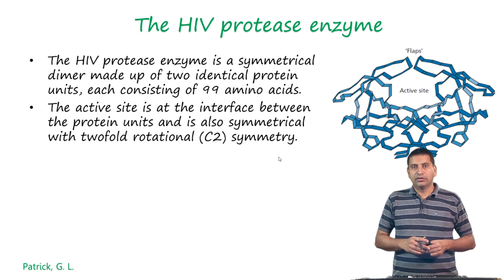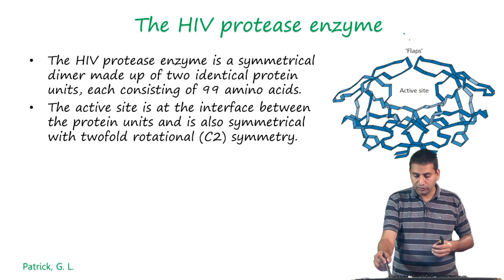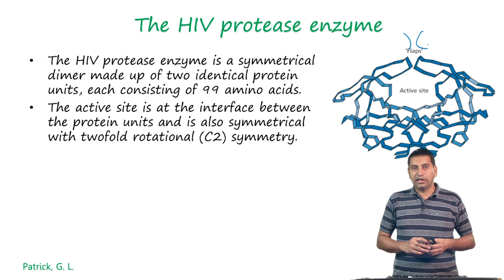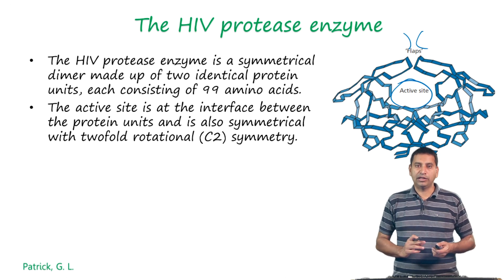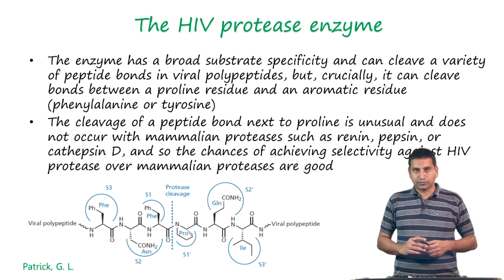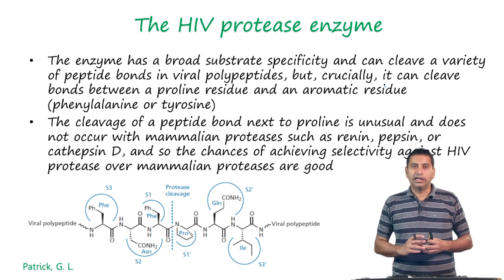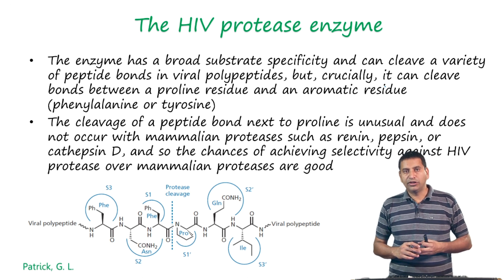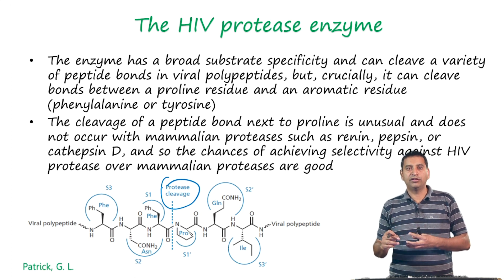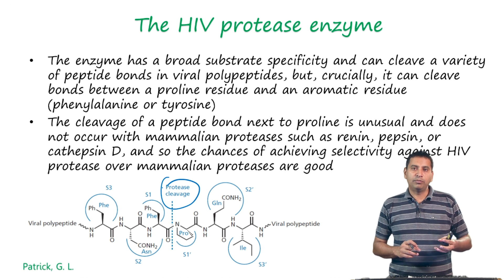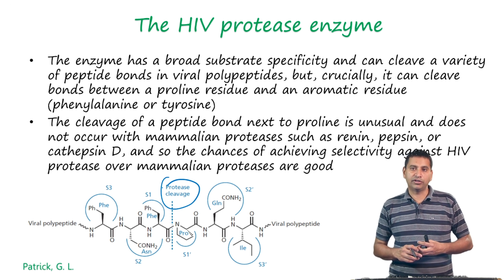The HIV protease is a symmetrical dimer made up of two identical units, each containing about 99 amino acids. The active site is at the interface between the protein units and is also symmetrical with two-fold rotational symmetry. The enzyme has quite broad specificity and can cleave a variety of peptide bonds in viral polypeptides. Crucially, it can cleave the bond between a proline residue and an aromatic amino acid residue such as phenylalanine or tyrosine.